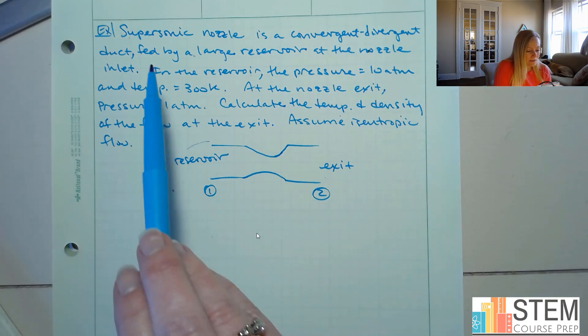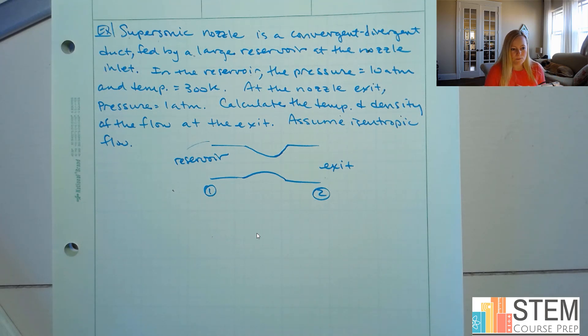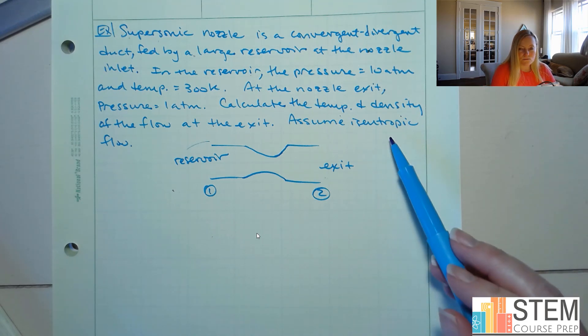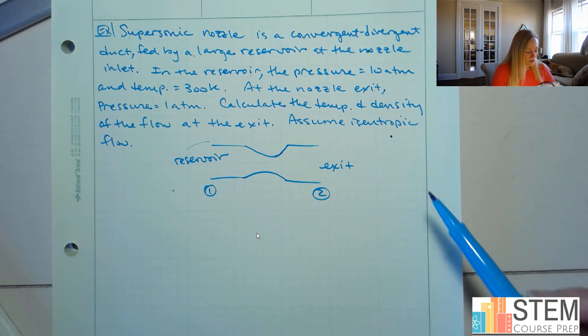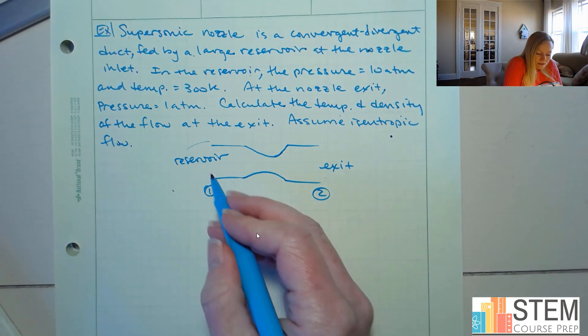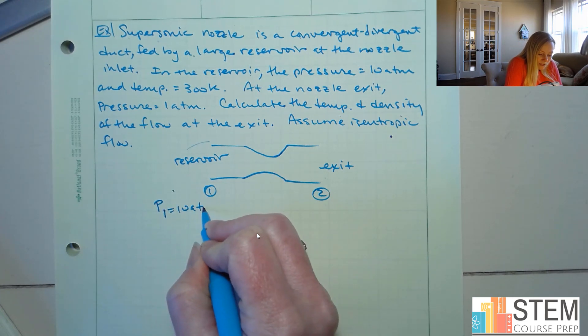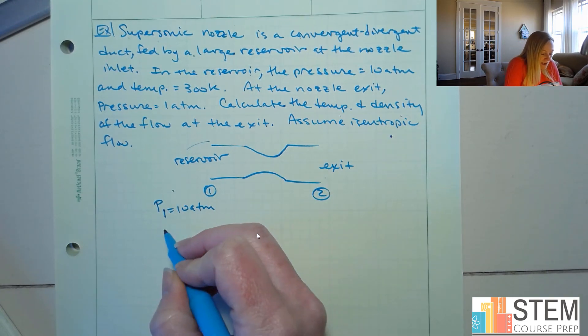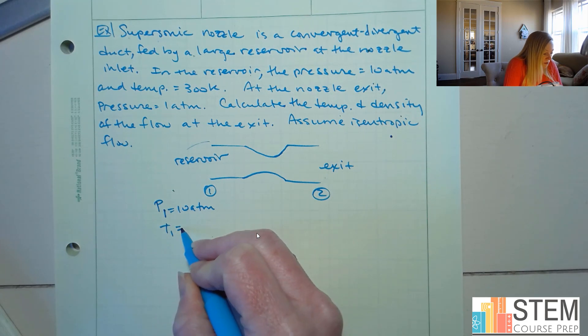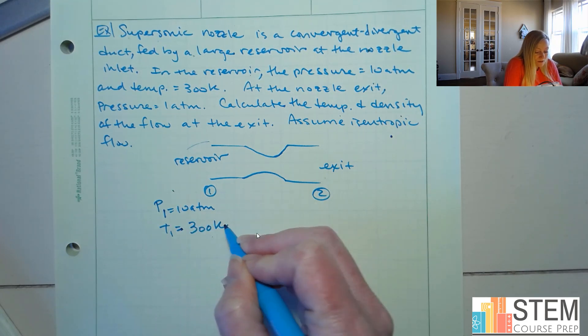Now anytime we see supersonic, that's a high-speed flow, so we're going to have compressible flow, which means we're going to assume isentropic flow. All right, so let's write our conditions out. So here at this point, our pressure was 10 atmospheres, and then our temperature was 300 Kelvin.